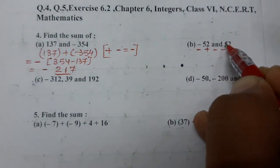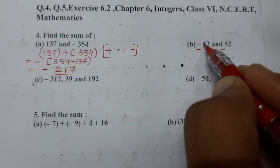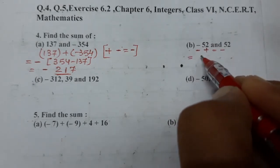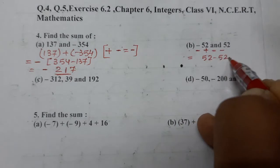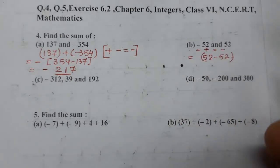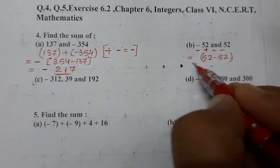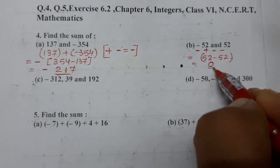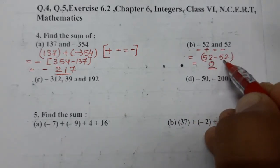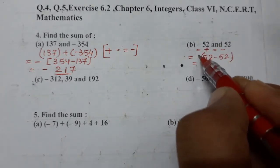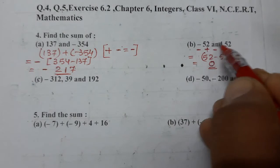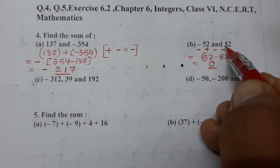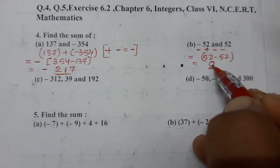52 plus (-52): both are same, so 52 minus 52 is zero. Zero ka koi sign nahi hota — zero is the answer. Because if you put plus zero or minus zero, zero doesn't have any sign. Both have equal value, so we don't put any sign. The answer is zero.